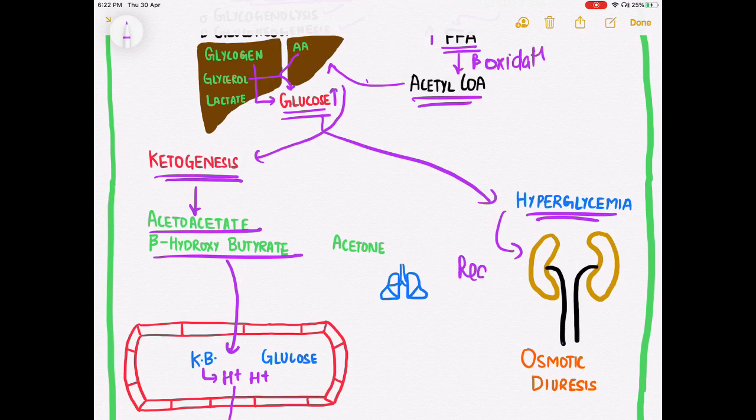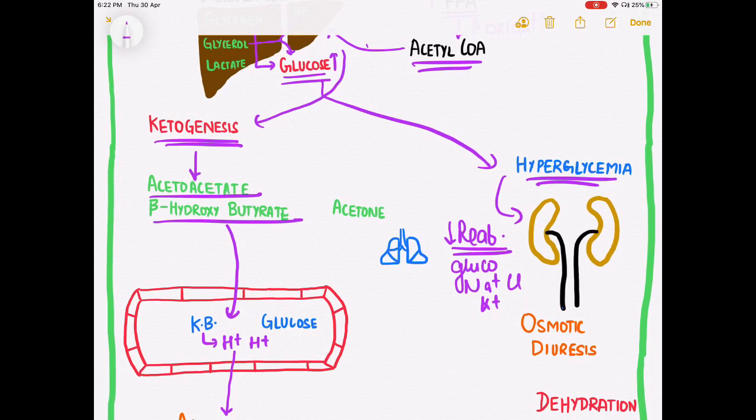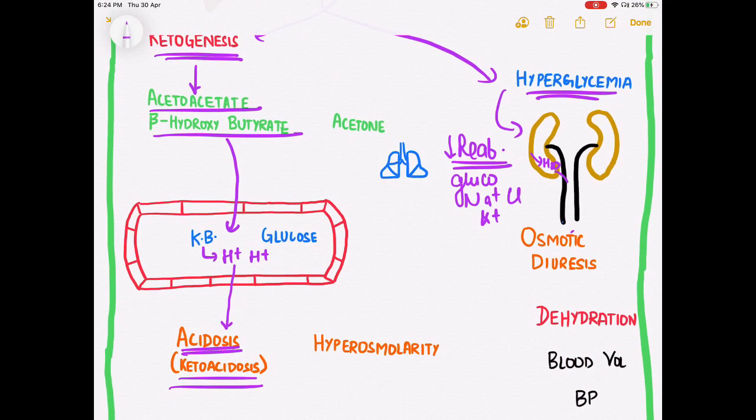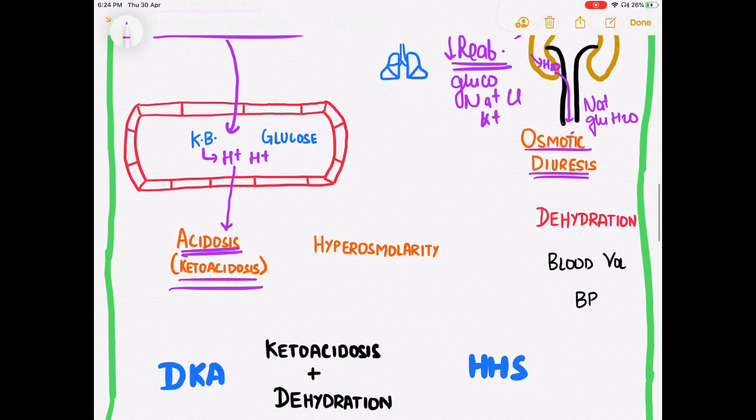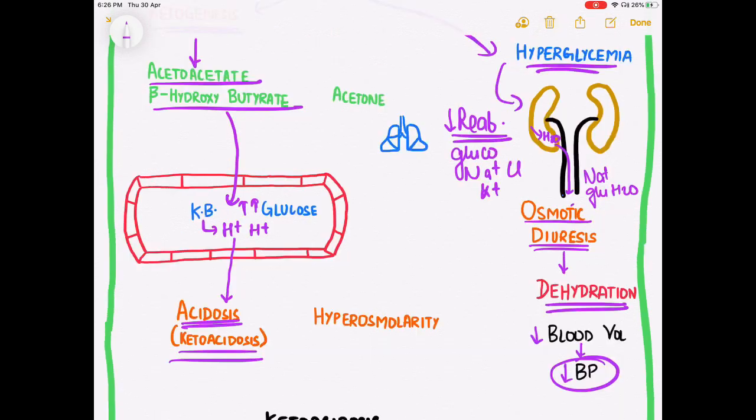When this blood reaches the kidney for filtration, the extra glucose present in the blood exceeds the reabsorption capacities of the kidney. Therefore, there is decreased reabsorption of glucose and other ions such as sodium, chloride, and potassium. This causes the drawing of excess water from the kidneys, leading to excessive excretion of sodium, glucose, and water along with other ions. This process is known as osmotic diuresis, which leads to dehydration.